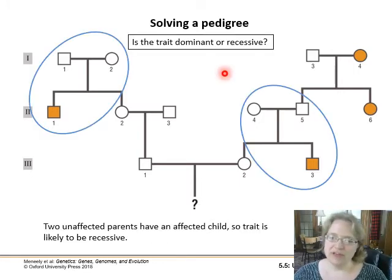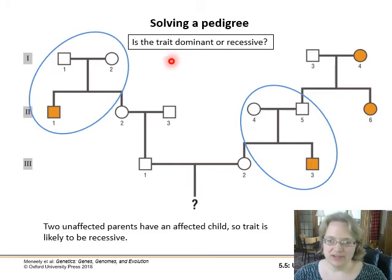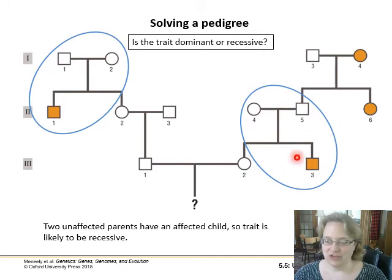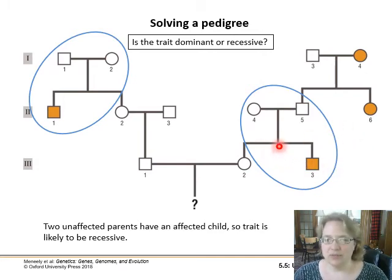First, we want to figure out if this trait is dominant or recessive as we fill in our pedigrees. Based on these two groups, we have two unaffected parents with an affected child on one side and two unaffected parents with an affected child on the other side. So we're going to say this is probably a recessive trait — very likely.